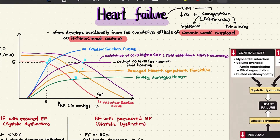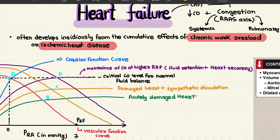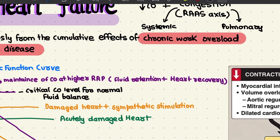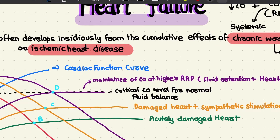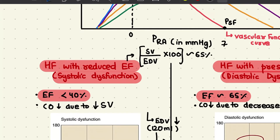Heart failure occurs when the heart is unable to pump blood at a rate sufficient to meet the metabolic demands of the tissue, or can do so only at an elevated filling pressure. It is usually a common end stage of many forms of chronic heart diseases, developing insidiously from cumulative effects of chronic work overload seen in hypertension or stenosis, or from systemic heart disease that decreases inotropy of the heart.